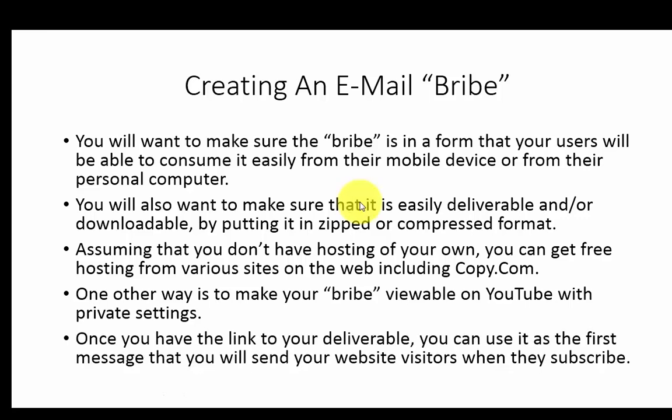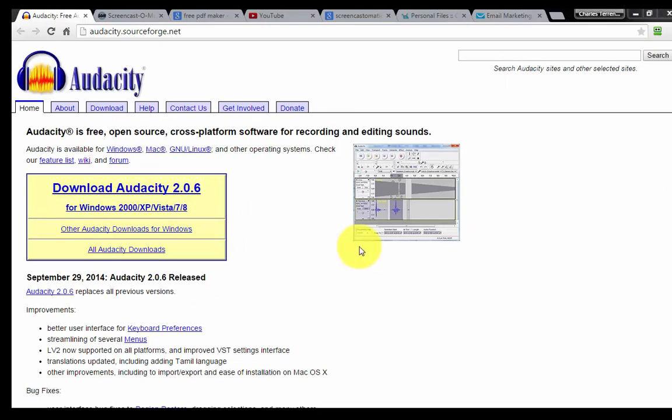Once you have the link to that deliverable, you can use it as the first message you send your website visitors when they subscribe. It's important to have them go through the opt-in process — the check-in process where they confirm their email address — so that when they confirm, they will then receive your bribe and your deliverable.